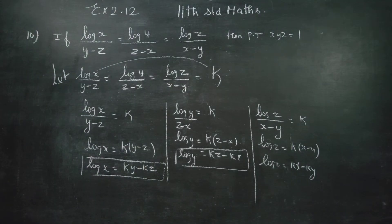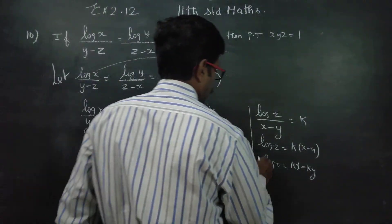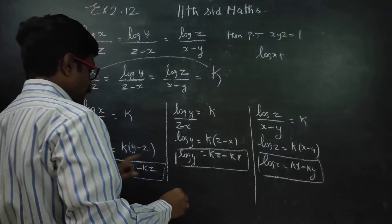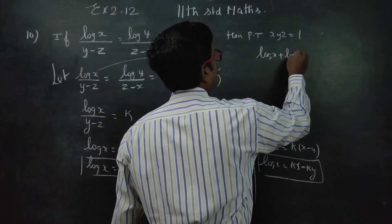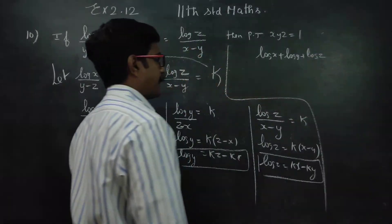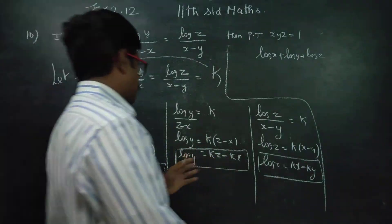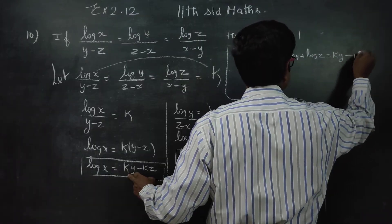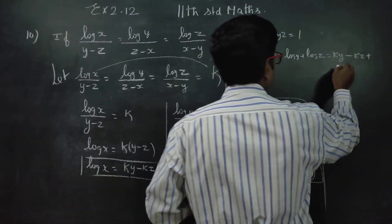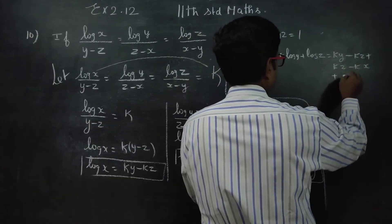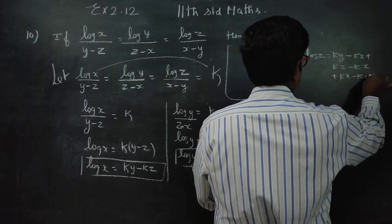First stage gives log x, second stage gives log y, third stage gives log z. Now I am going to add all three equations together — log x plus log y plus log z. Adding the left-hand side and the right-hand side of all three equations.